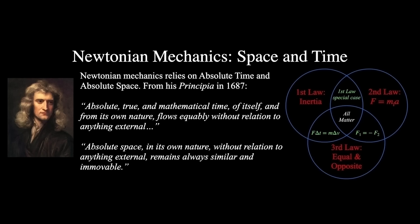Newton started from a completely different philosophical stance than Galileo. Newton based his mechanics on the notion of an absolute time and an absolute space. As he wrote in the Principia in 1687: 'Absolute, true and mathematical time of itself and from its own nature flows equably without relation to anything external.' And: 'Absolute space, in its own nature, without relation to anything external, remains always similar and immovable.' What this meant was that Newton assumed there was an absolute reference frame in both space and time. You too likely think that space and time are both absolute constructs.